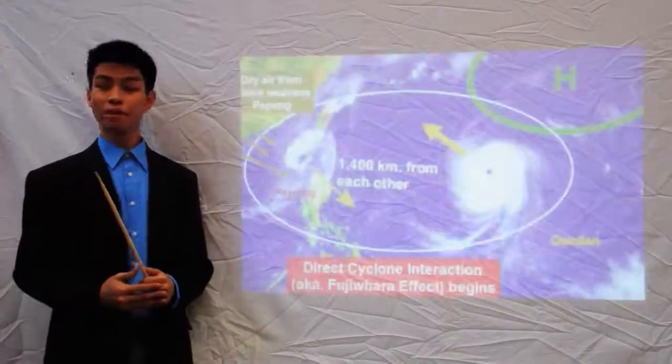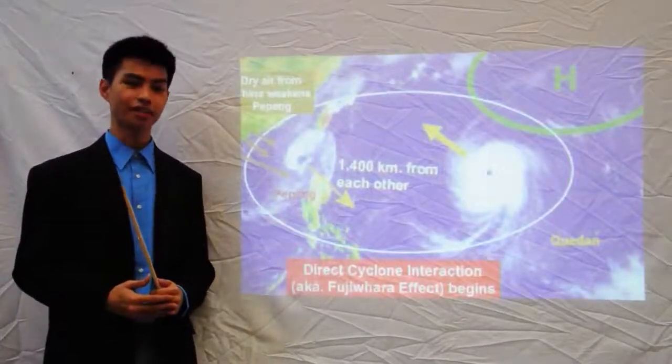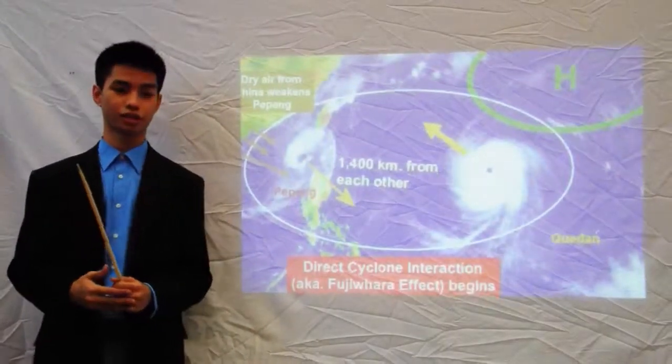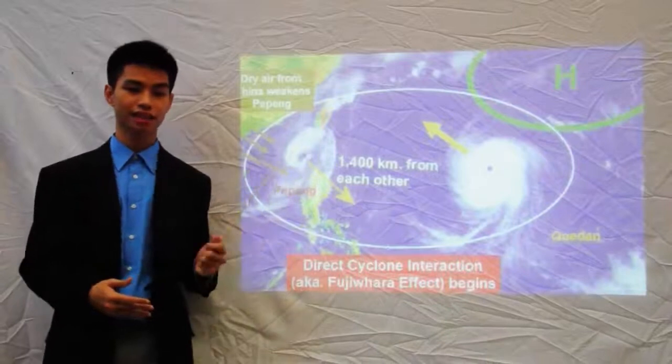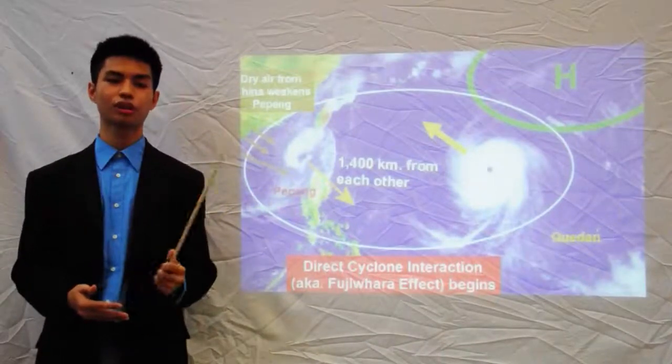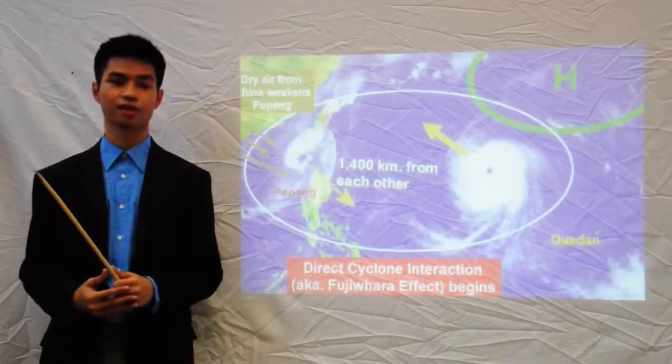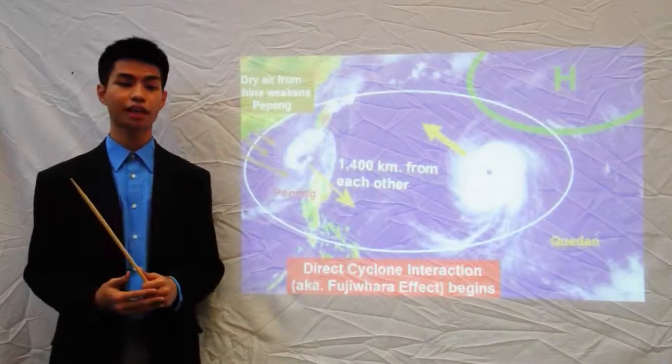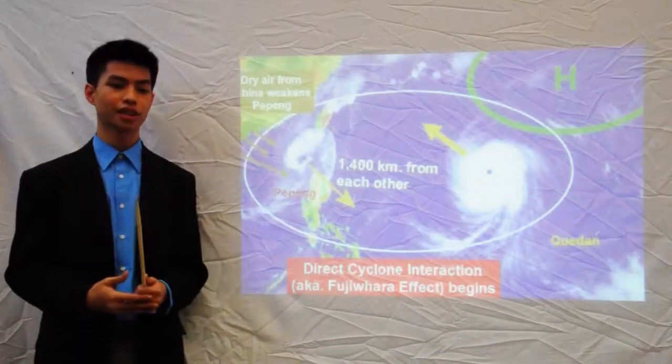Meanwhile, Pepeng's lover, named Kedan, is approaching from the Pacific Ocean. It's about the same size as Pepeng with wind speeds of 165 kilometers per hour. It's entering the Philippine area of responsibility and is headed towards Japan.